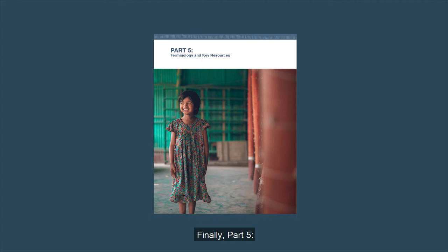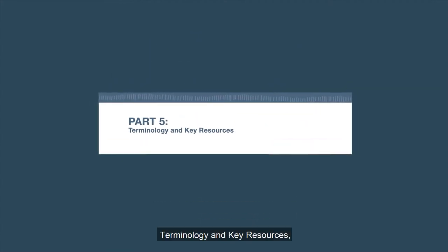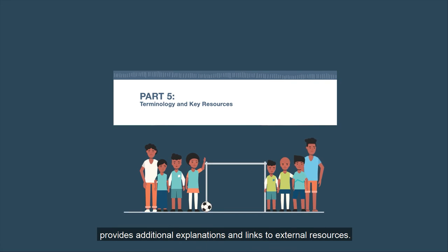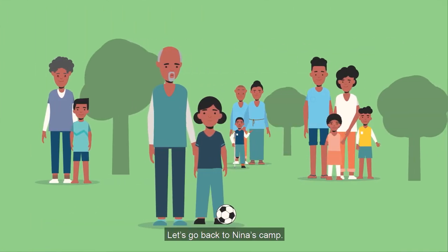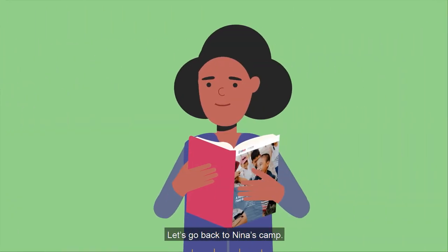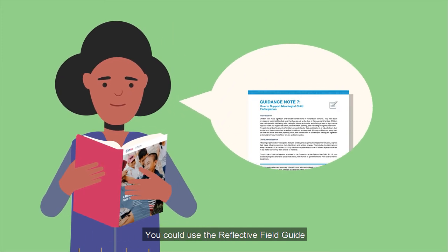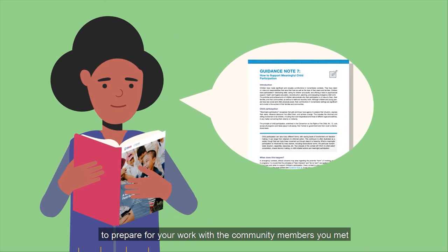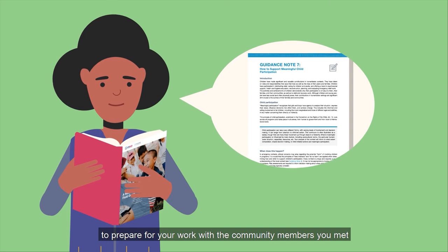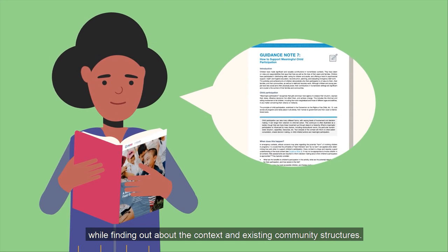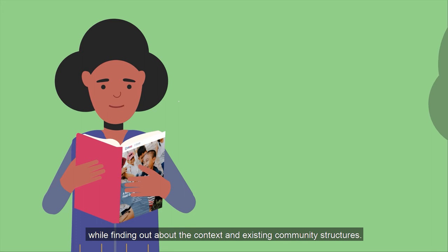Finally, Part 5, Terminology and Key Resources, provides additional explanations and links to external resources. Let's go back to Nina's camp. You could use the Reflective Field Guide to prepare for your work with the community members you met while finding out about the context and existing community structures.